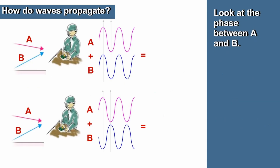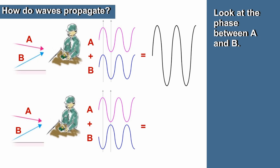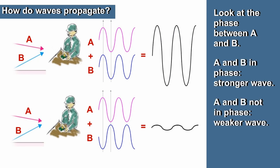So what happens when the waves A and B arrive at the receiver? We can look at the phase relationship between them. There will be distances from the transmitter where the two waves are in phase to interact and create a stronger wave, and places where they are out of phase to create a weaker one. By comparing the electric field strengths between the free space and two-wave models, we will see the influence due to the reflected wave.